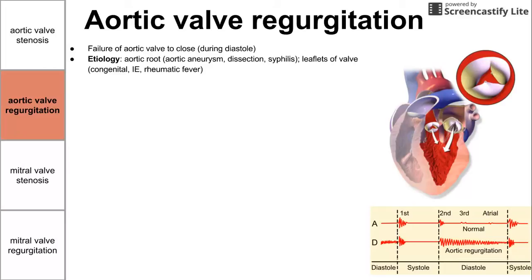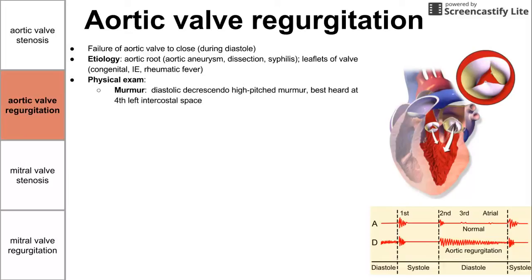We could also have problems with the leaflets of the valves themselves, such as infective endocarditis, a congenital problem of the leaflets, and rheumatic fever. On physical exam, we see a diastolic murmur — decrescendo, decreasing in intensity, pretty high pitch. You hear it best at the fourth left intercostal space, during diastole.